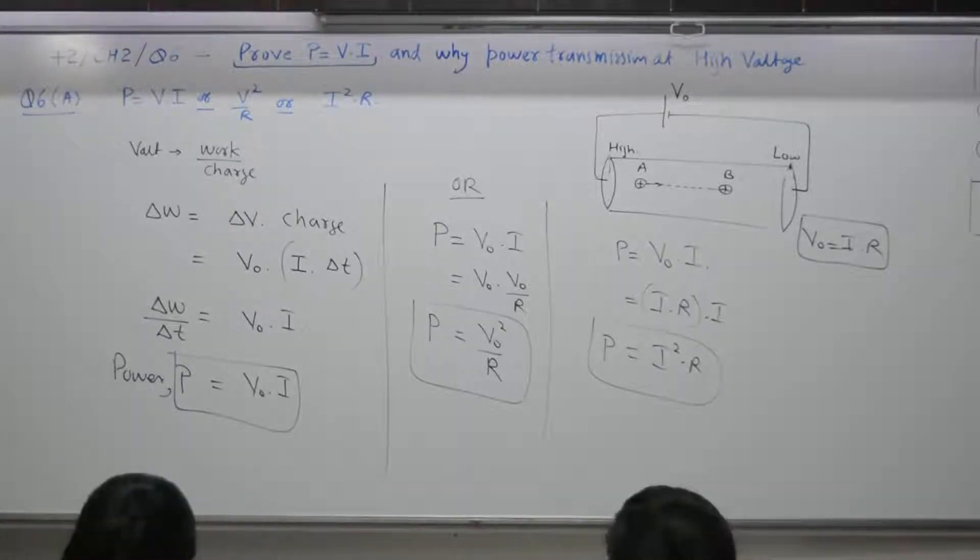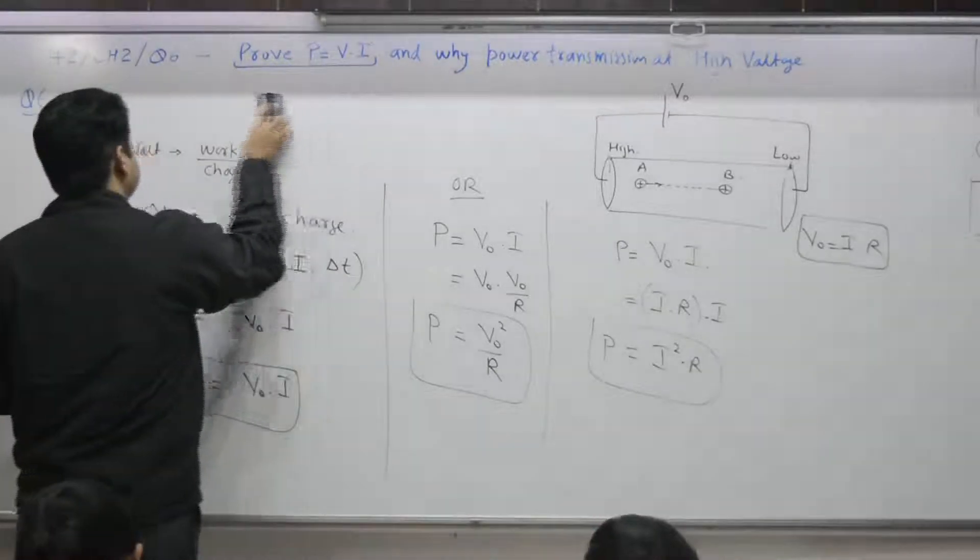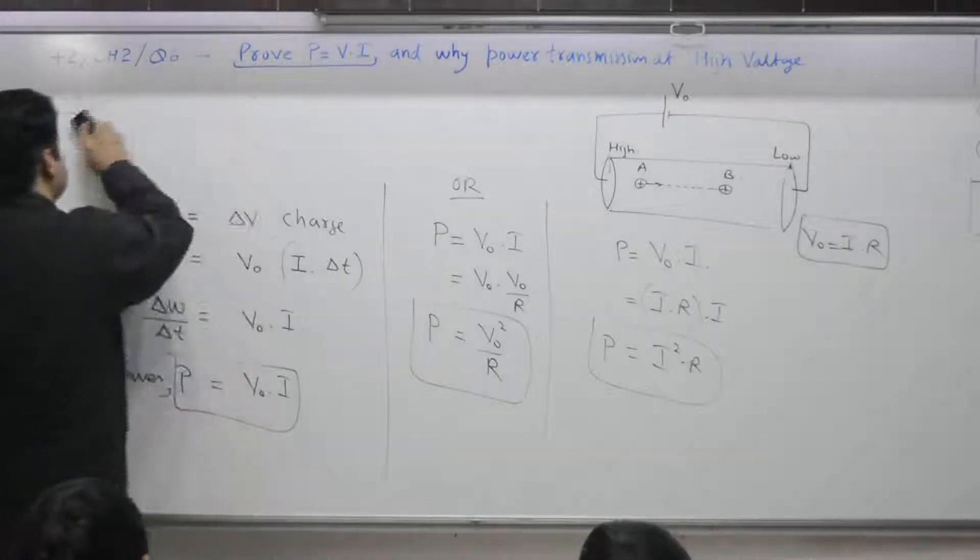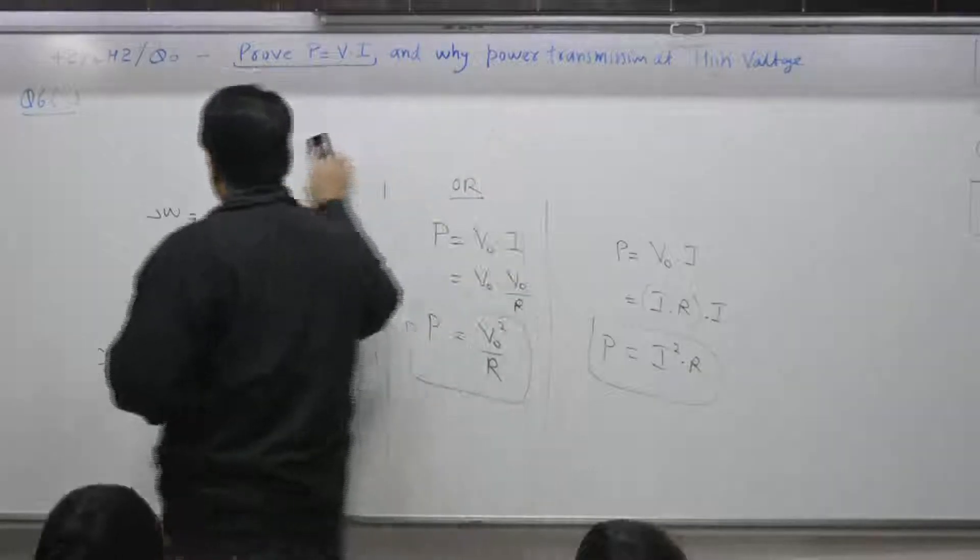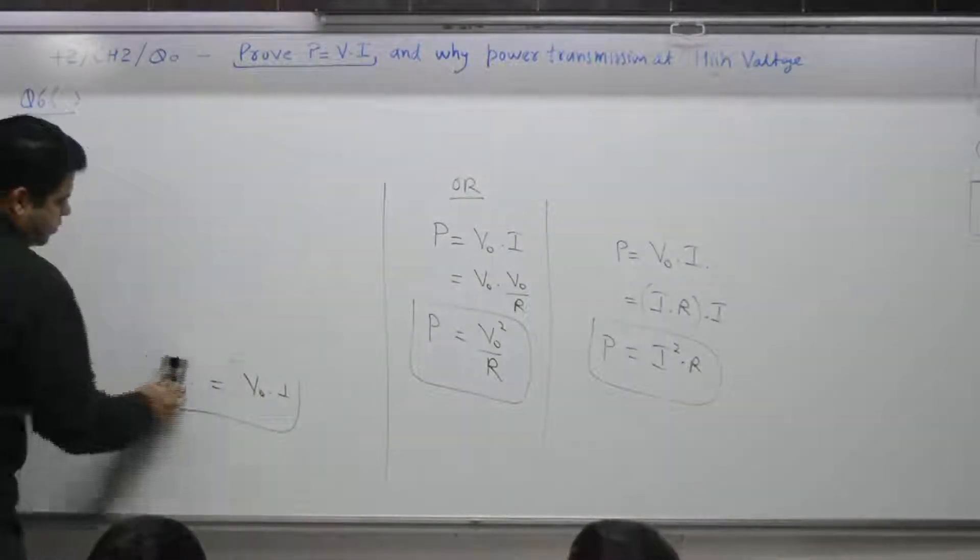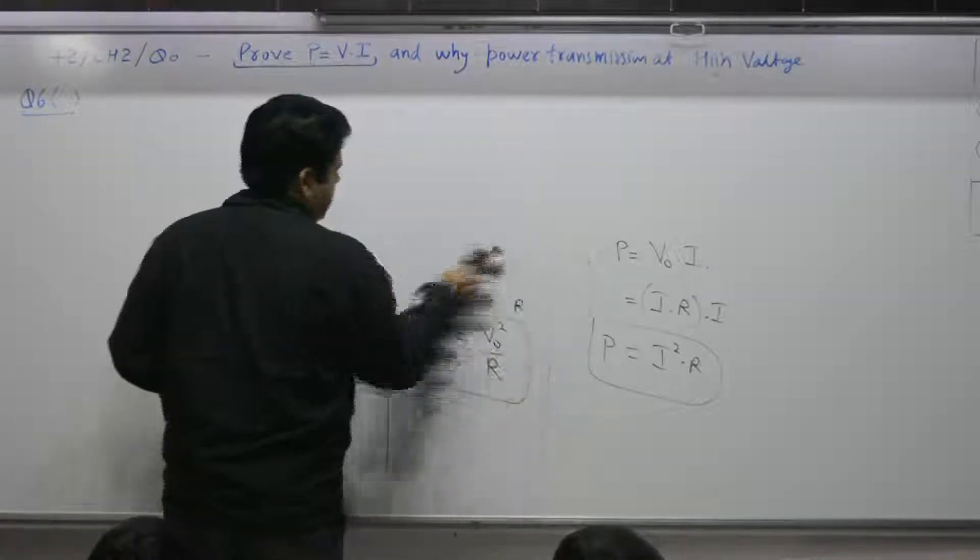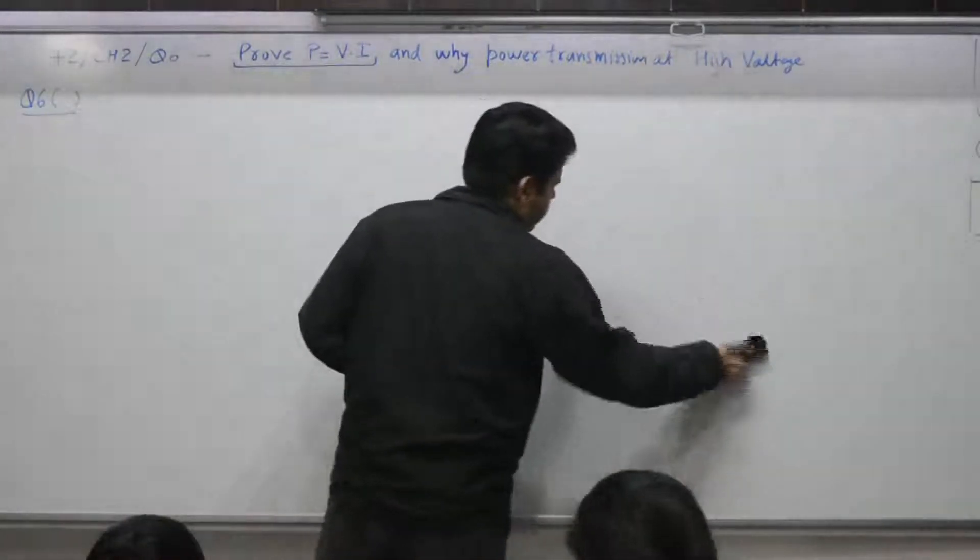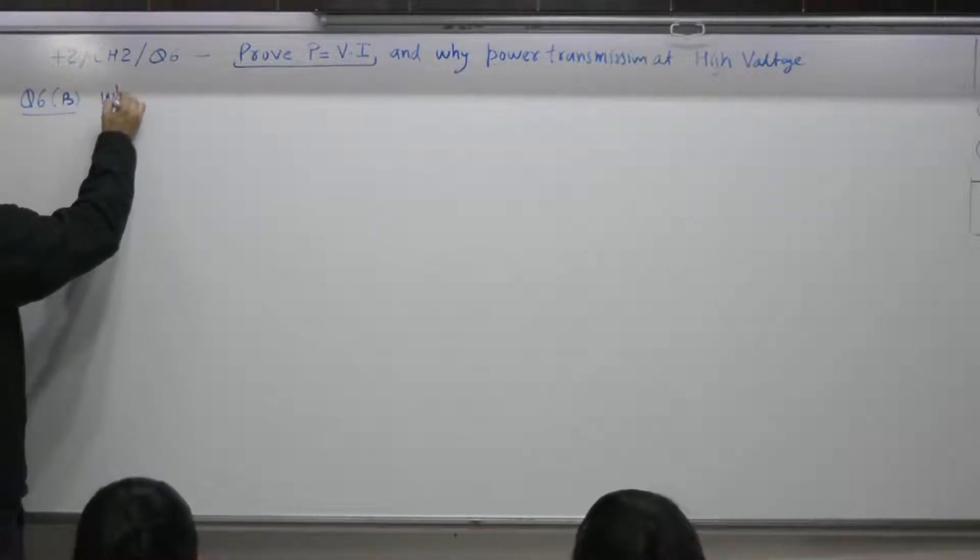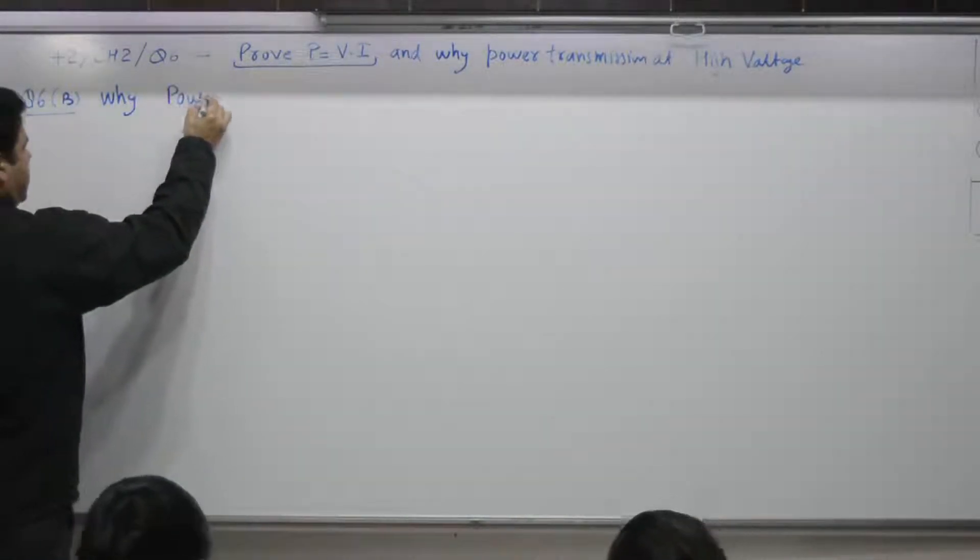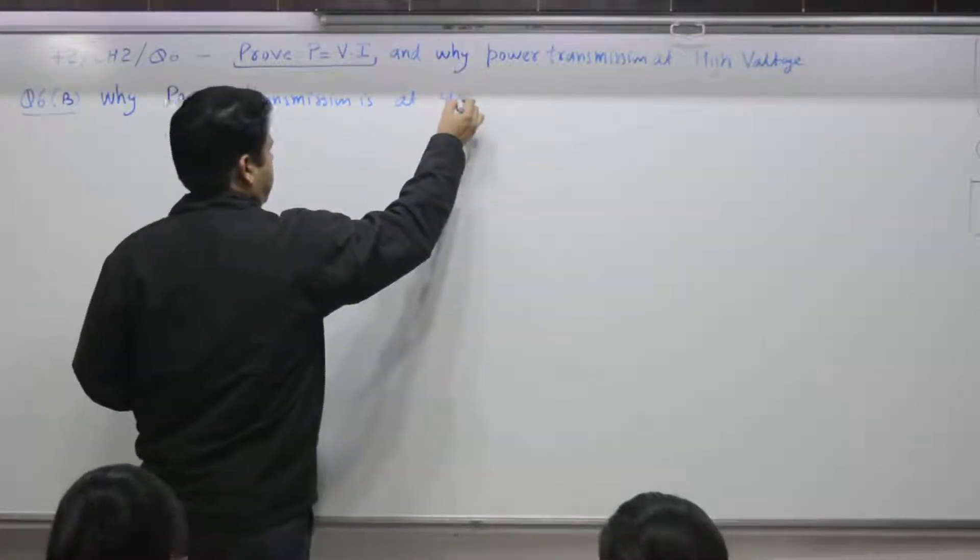Or P is equal to V naught into I. Time with you is 3 minutes. So P is equal to V naught into I. I want to write V naught into I. Time with you.